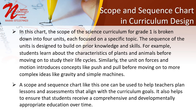In this chart, the scope of the science curriculum for grade 1 is broken down into 4 units, each focused on a specific topic. The sequence of the units is designed to build on prior knowledge and skills. For example, students learn about the characteristics of plants and animals before moving on to study their life cycles. Similarly, the unit on forces and motion introduces concepts like push and pull before moving on to more complex ideas like gravity and simple machines. A scope and sequence chart like this can be used to help teachers plan lessons and assessments that align with the curriculum goals, and it helps ensure that students receive a comprehensive and developmentally appropriate education over time.